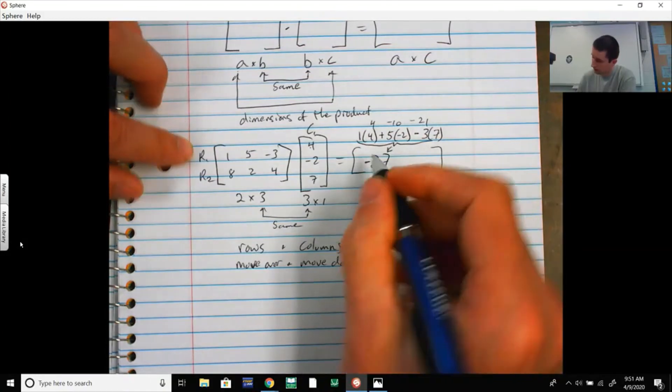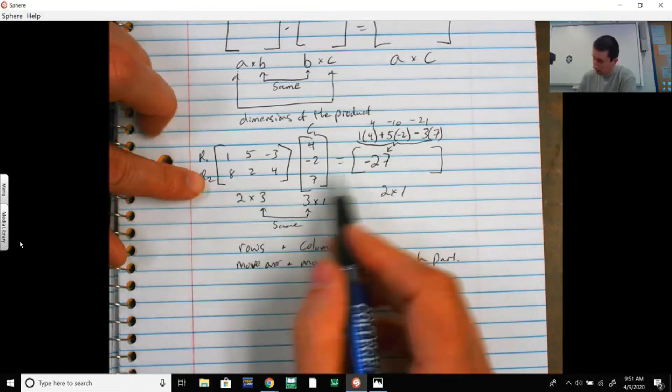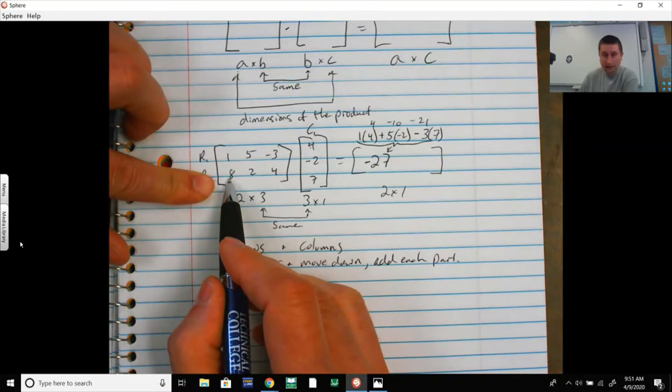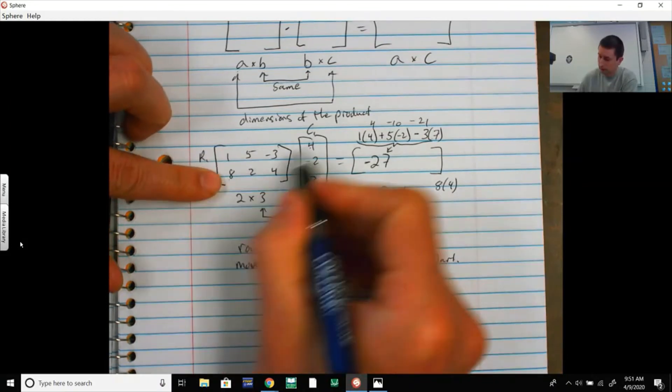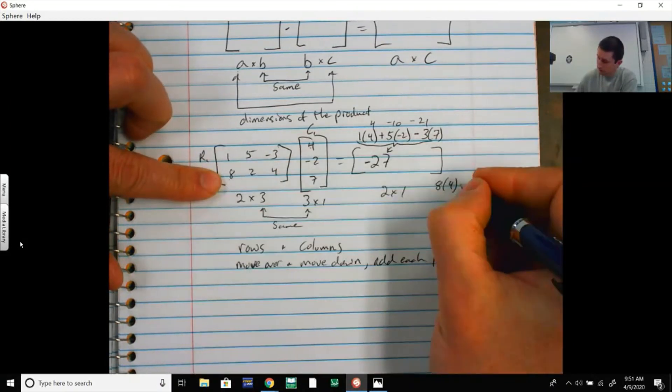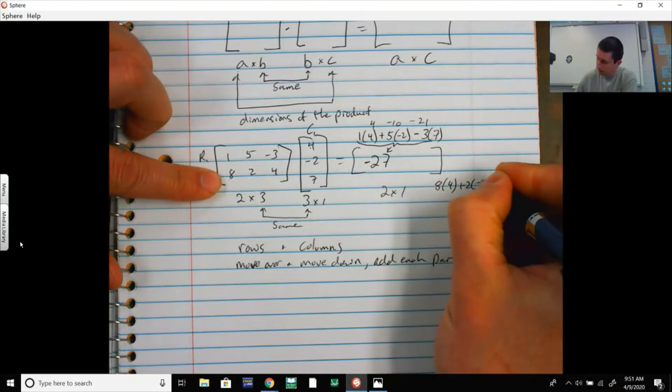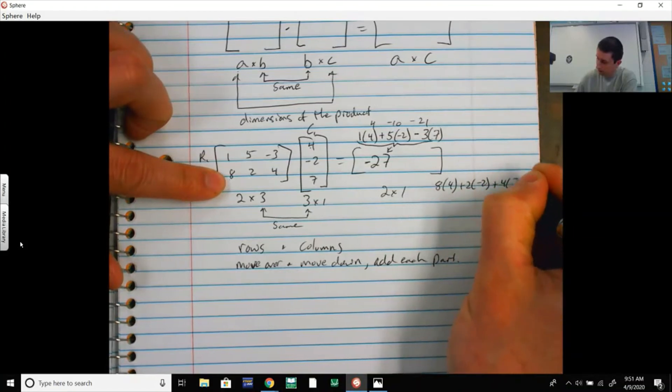On the second one, I go down here, I start here on the left, and I go back to the top here. I have to take 8 times 4, plus 2 times -2, plus 4 times 7. Notice I moved over and I moved down.